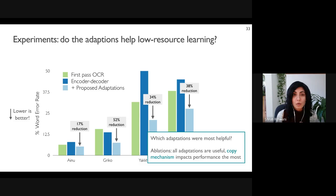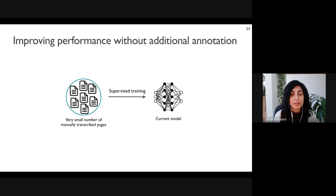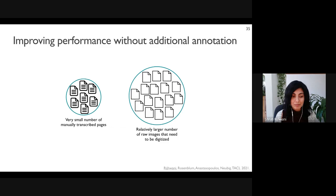We now have a post-correction model trained with supervised learning on a small number of manually transcribed pages. While we did see a decrease in word error rate over the first-pass OCR, further improvements will require more manual annotation. However, while we only have a small number of manually transcribed pages, we have a large number of unannotated raw images that need to be digitized — the documents in our dataset contain hundreds of pages but only a very small subset is manually transcribed.